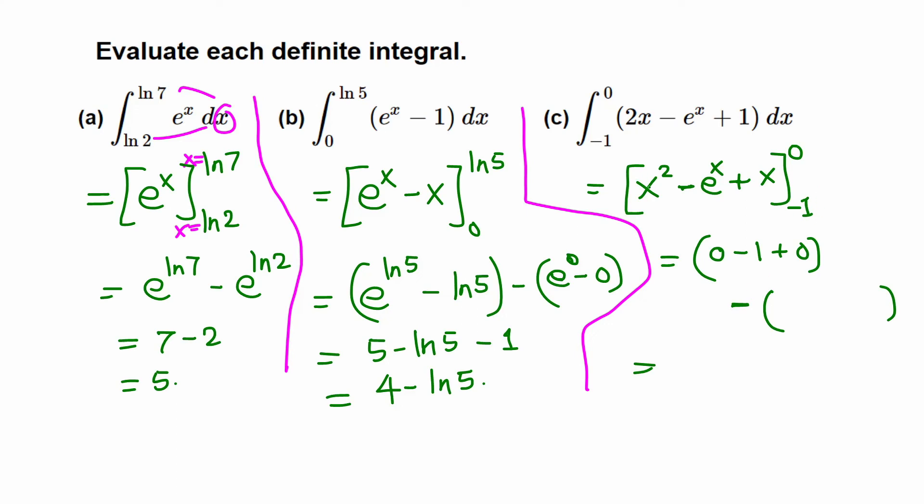Now lower limit: negative 1 squared - that's negative 1 quantity squared. We are replacing x by negative 1, so that is just positive 1. Minus e raised to negative 1, this is a decimal number, plus negative 1. Plus negative 1 means just minus 1. From the first part here, 0 minus 1 plus 0 is just negative 1.